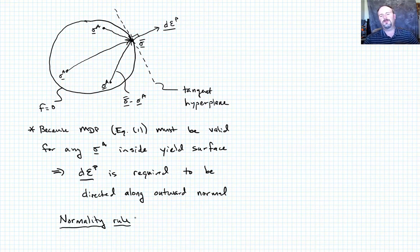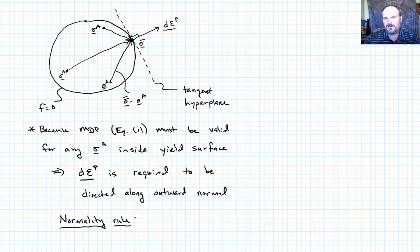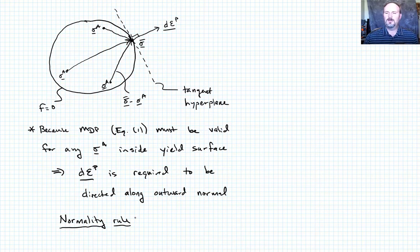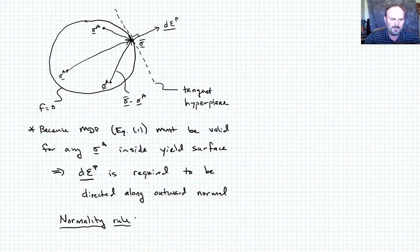We had talked about the normality rule previously, but now we have derived it. All of this work — taking Drucker's postulate, developing a new postulate for complementary work during a stress cycle, and arriving at the maximum dissipation postulate — leads us to the conclusion that the plastic strain increment must be normal to the yield surface. That is one of the significant outcomes of the maximum dissipation postulate.